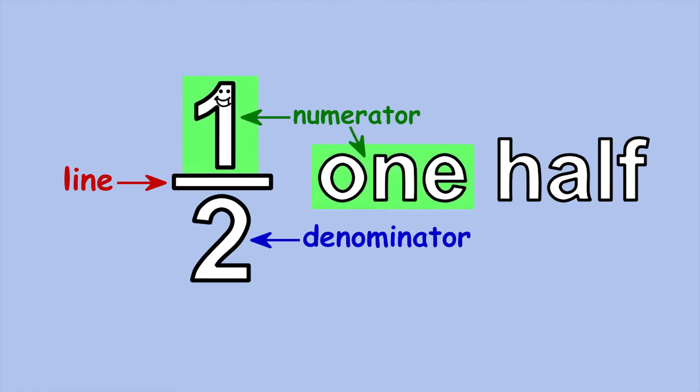The first part of my name is just the name of the number that's my numerator, one. And the last part of my name comes from my denominator. When the number two is written below the line, you say half instead of two. So I'm one-half.